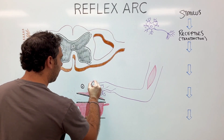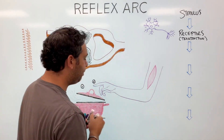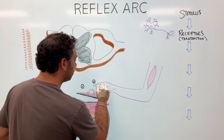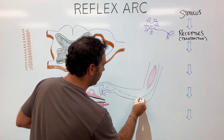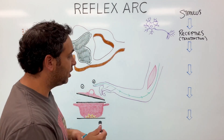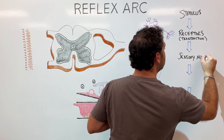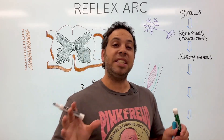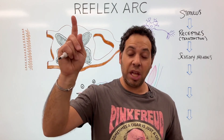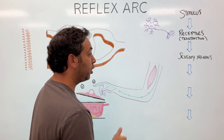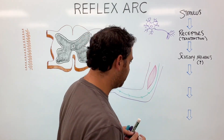So we have our stimulus, we have our receptors turning that signal into action potentials, and that signal is going to travel up the body via what we call a sensory neuron. An interesting thing about neurons and your nervous system in general is that information only travels in one direction — either up to the brain or away from the brain. Sensory neurons go toward the central nervous system.